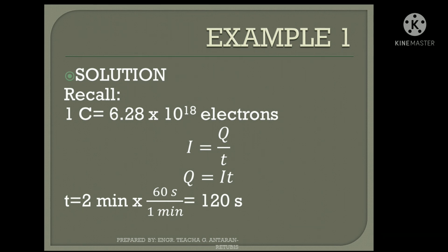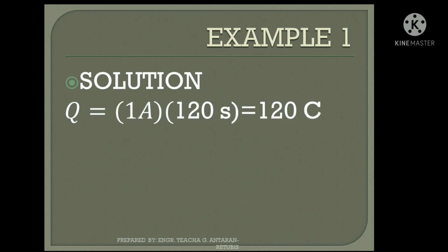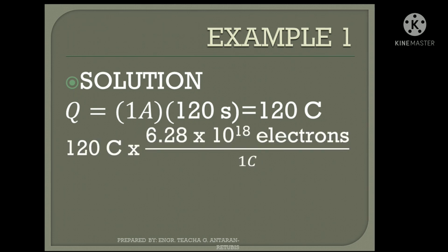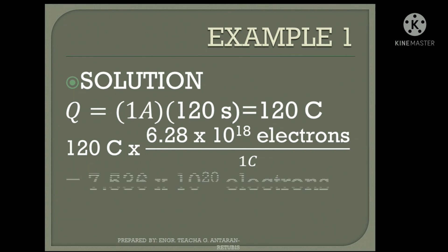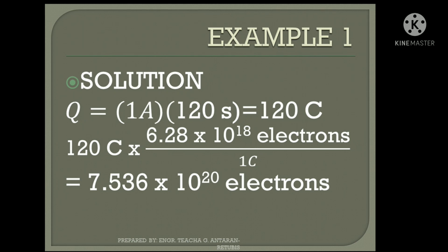Our units are now correct, so we can substitute into the formula. Charge Q equals 1 ampere times 120 seconds, which is 120 coulombs. Using the conversion that 1 coulomb contains 6.28 times 10 raised to 18 electrons, the number of electrons for 1 ampere over 2 minutes is 7.536 times 10 raised to positive 20 electrons. That is our answer.